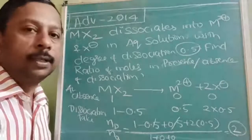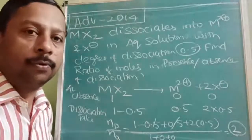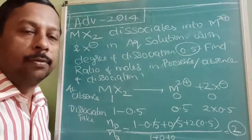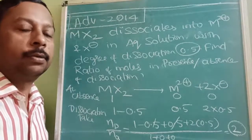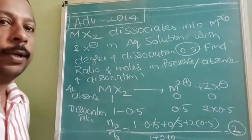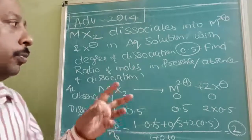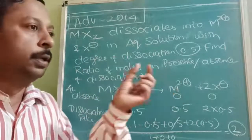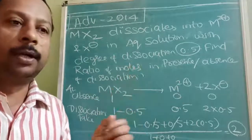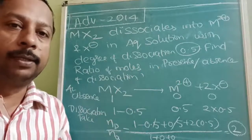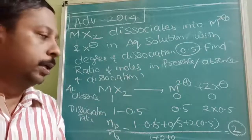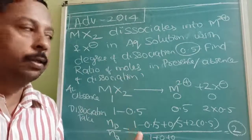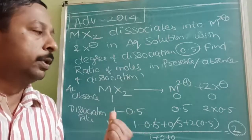So this was the Advanced 2014 question — you can cross-check with the question paper. To avoid confusion: they have used the term 'depression of freezing point,' which corresponds to this same ratio. Note down this question.